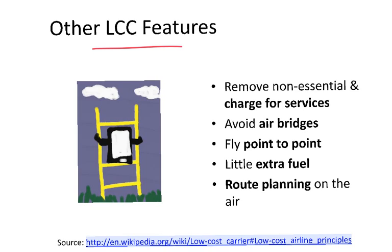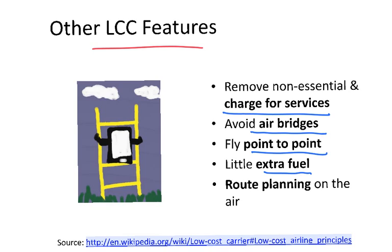There are other cost-reduction features as well. For instance, charging for everything served on board — if you want food or drink, you pay for it. Some airlines avoid jet bridges so passengers walk from the aircraft to the terminal, paying lower fees to the airport. They tend to fly point-to-point, a simpler operation that reduces cost. They also carefully adjust the amount of fuel put on board to minimize weight and optimize fuel consumption. And route planning for the next flight is done on arrival, saving time.